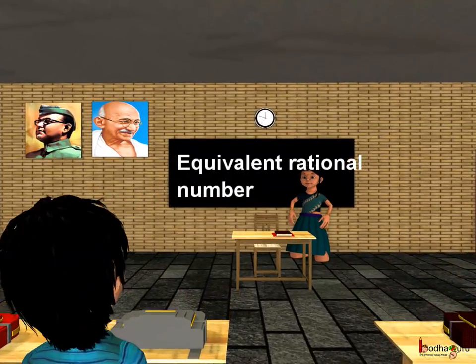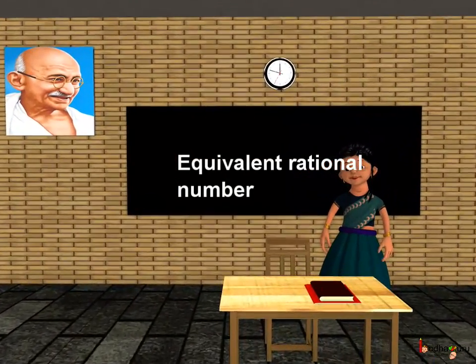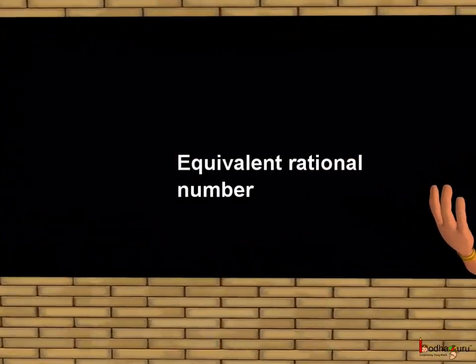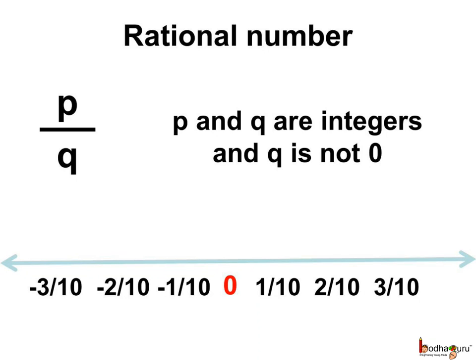Good morning children. Today we shall learn about equivalent rational numbers. As we know, a rational number is defined as a number that can be expressed in the form p by q, where p and q are integers and q is not equal to 0.